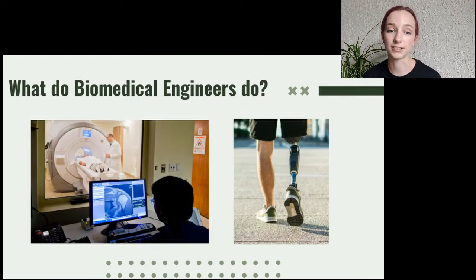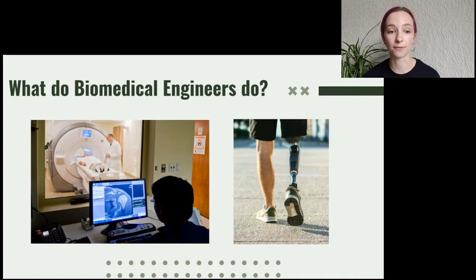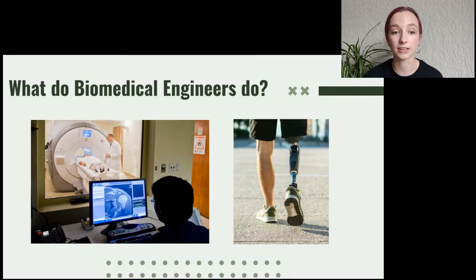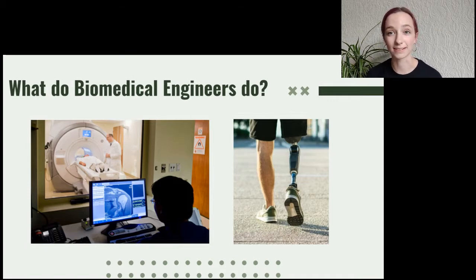This slide shows some pictures of the things I was talking about. The picture on the left shows something called an MRI machine, which is another technique used to show medical staff what's going on inside the body. On the right you can see an example of somebody using a prosthetic to treat a limb deficiency where they are missing part of one of their legs. Prosthetics is a field of biomedical engineering that we're going to be thinking a little bit more about today as we go into our craft activity next.